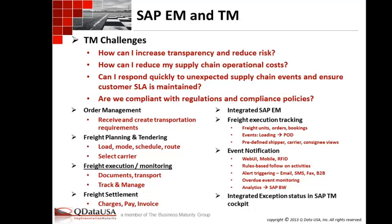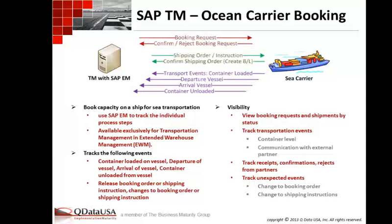There is alert integration — the ability to uncover an exception and send an alert using the alert framework. Beyond the alert framework, you can configure it to send an email, SMS, or fax. Ocean carrier booking is a scenario that is delivered. We capture all these events: sending a booking request, confirming or rejecting the booking request from a carrier, sending the shipping order or instruction, the carrier confirms it, and then all transportation events come through — loading, departure, arrival, unloading. All of that comes into event management, giving visibility in the execution tab against the order.